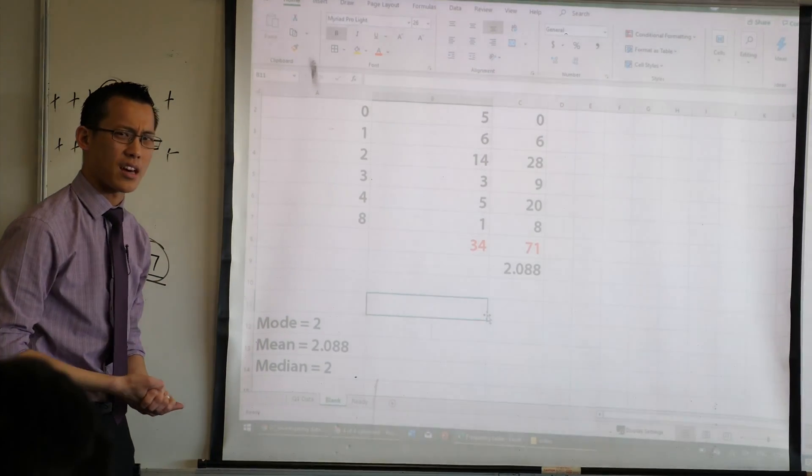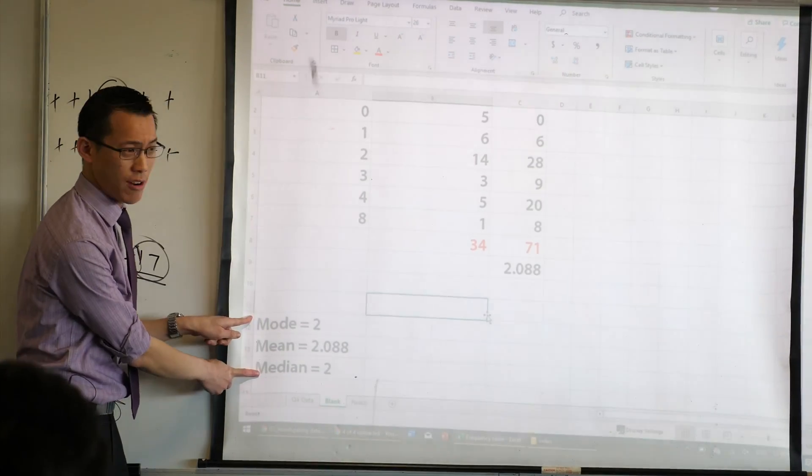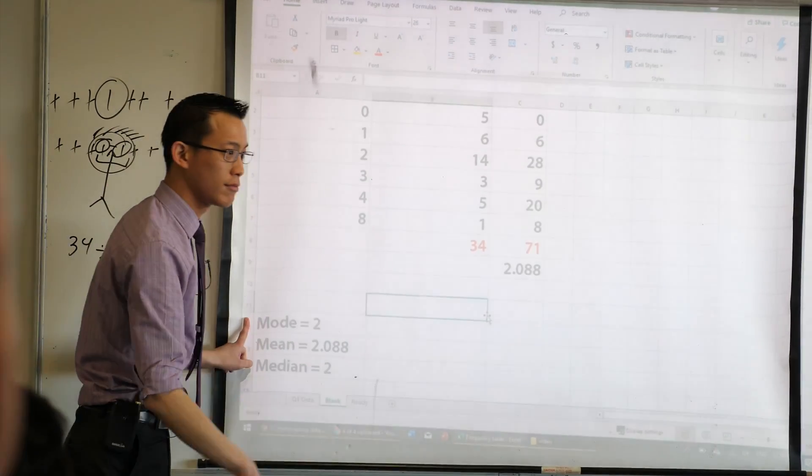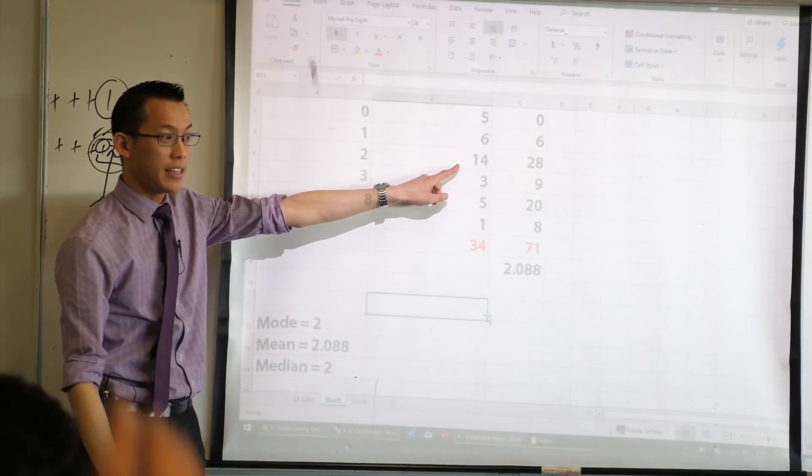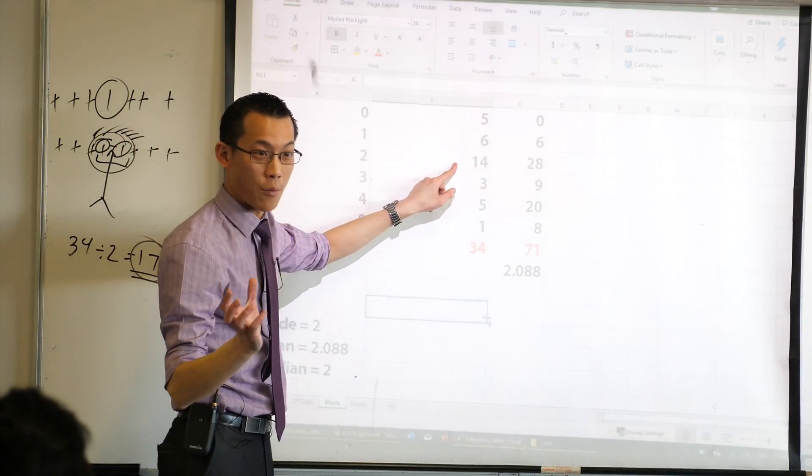Why is it that they're all so close together? Like in this case, they're identical. Is this just a giant amount of twos? Yeah, it's just a giant amount of twos which kind of skew everything that way.